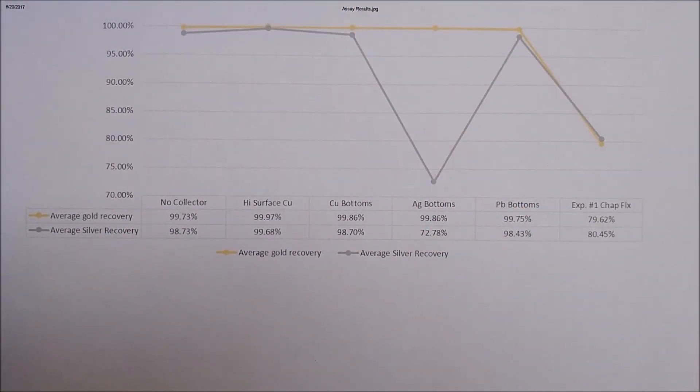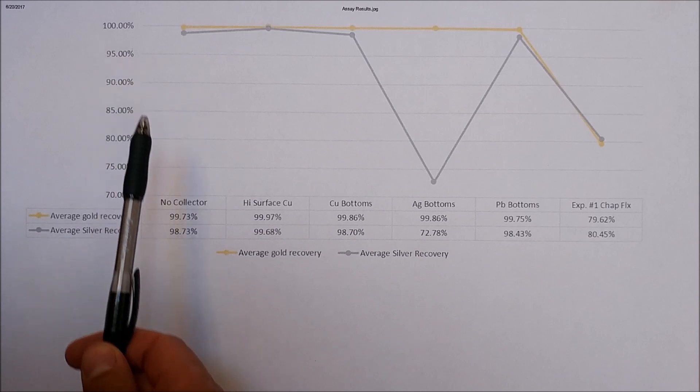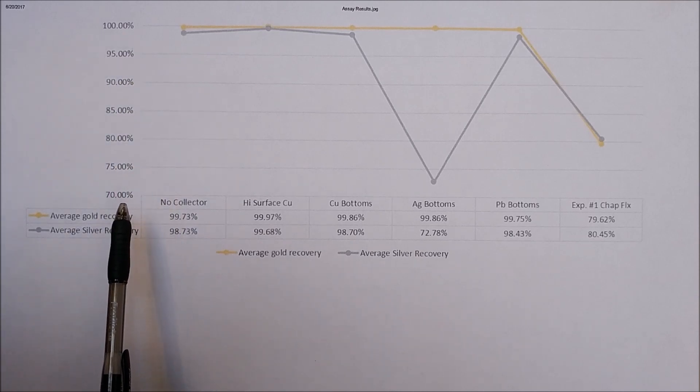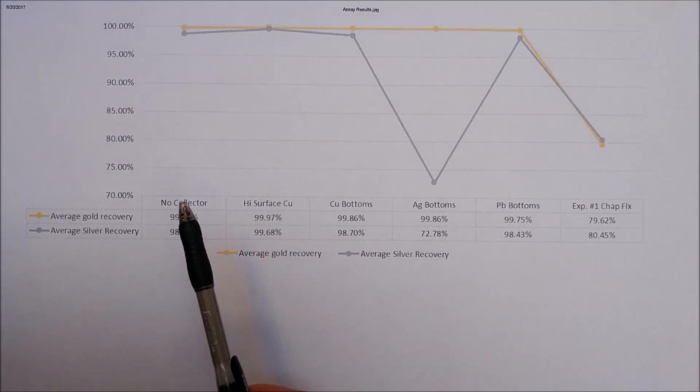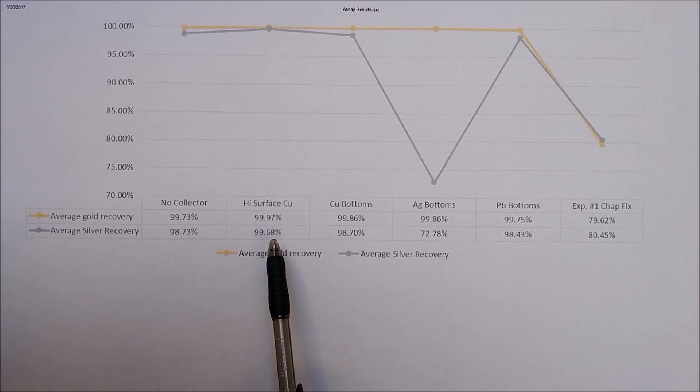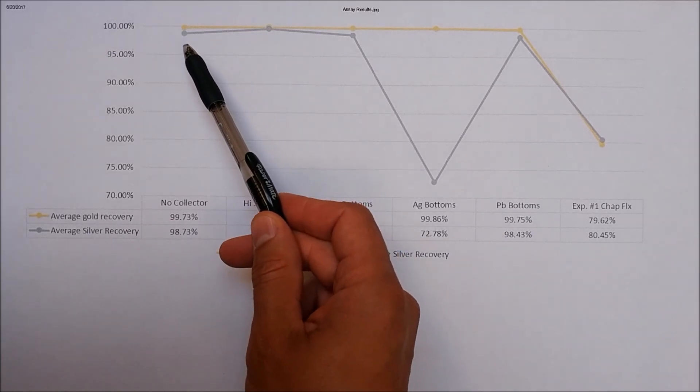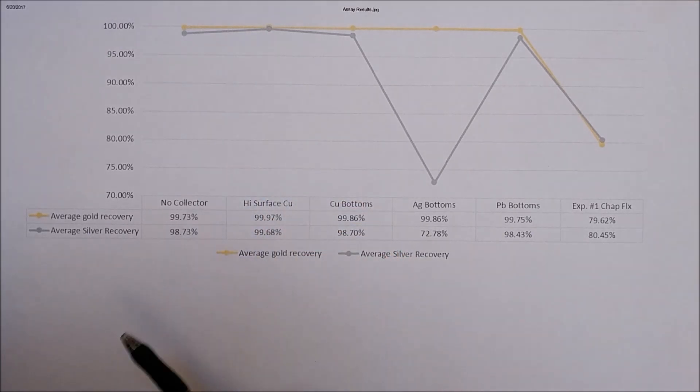Okay, so here are the results from our assays. And before we get into them, I'm going to go over a few things. This axis here is the percent recovery, it goes down to 70. This axis along the bottom is the different collector metals we used. And the yellow line is the gold recovery, the gray line is the silver recovery. And even though I ran two samples of each test, they were so close that I averaged them together. And that's why we ended up with one point here in the graph, even though we ran two samples.